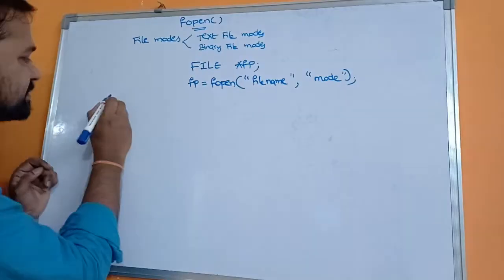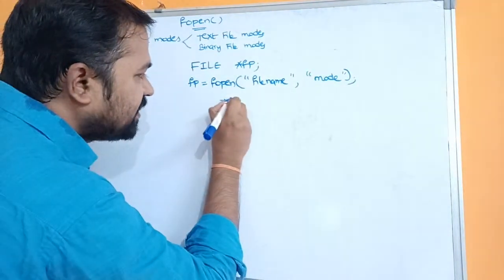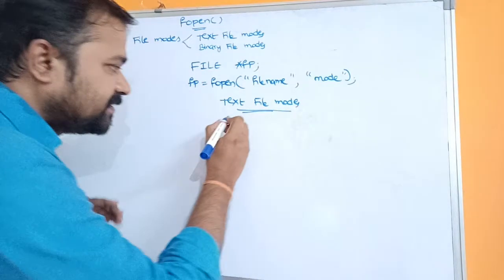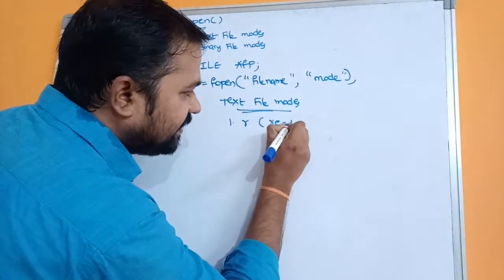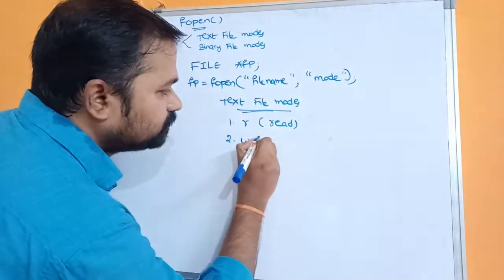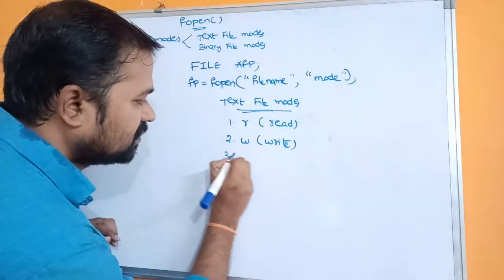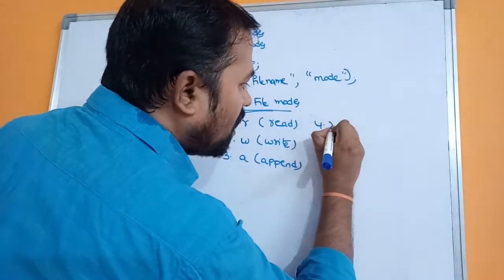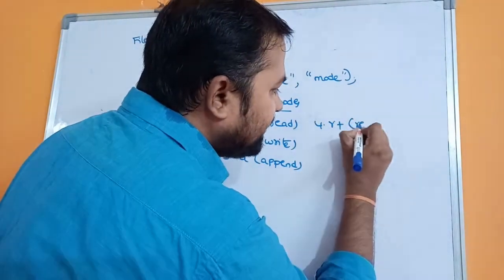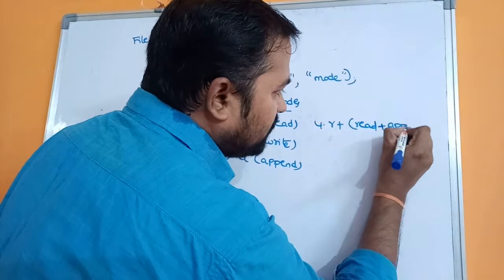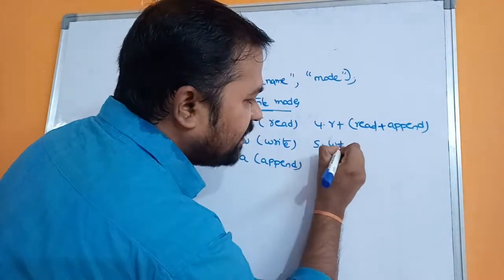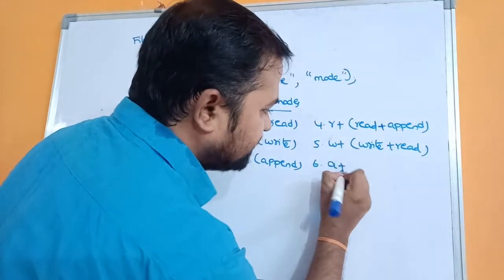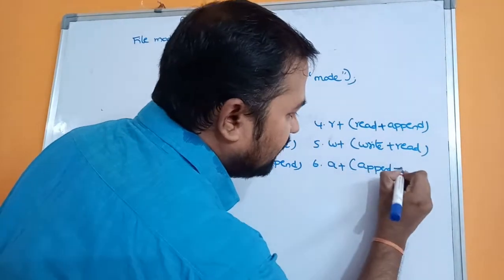Now let's see what modes are available. We have two types of file modes: first is text file modes and second is binary file modes. In text file modes, totally there are six modes: R (read), W (write), A (append), R+ (read and append), W+ (write and read), and A+ (append and read).